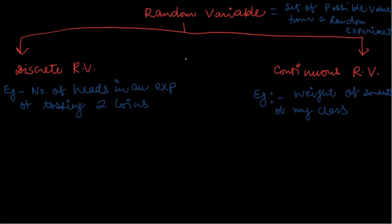A random variable is a set of possible values from any random experiment. Random variables can be of two types: discrete random variables or continuous random variables. Discrete random variables are those where the experiment gives discrete values, whereas continuous random variables are those where the output of the experiment is continuous.